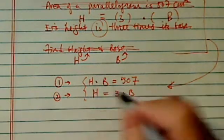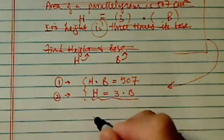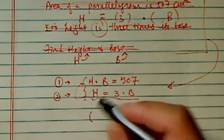And substitution is the best way to go, because h is equal to 3b. So let's substitute h equal to 3b back to equation 1.